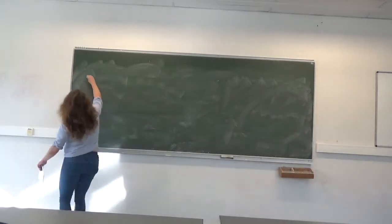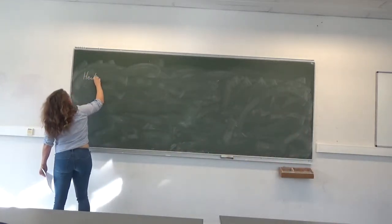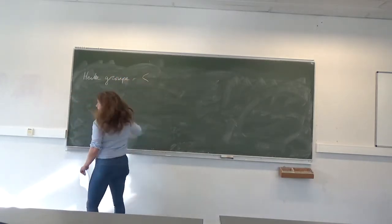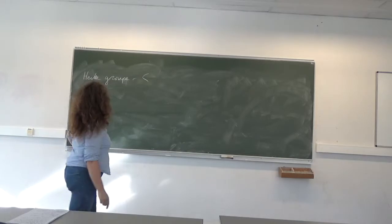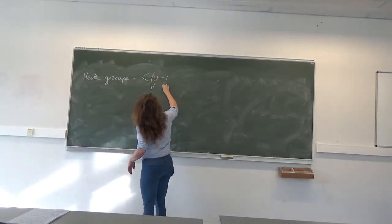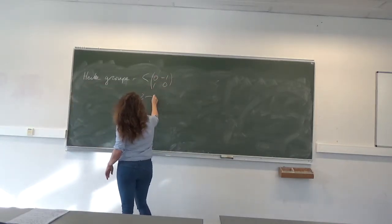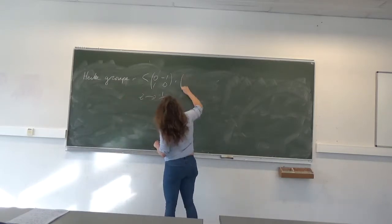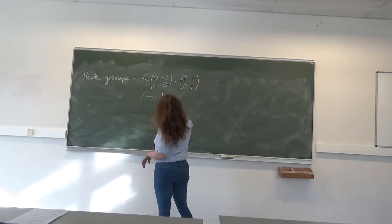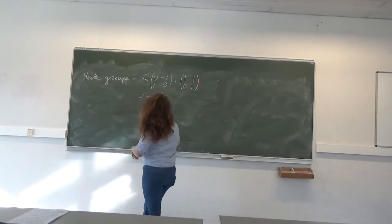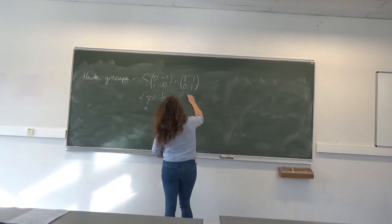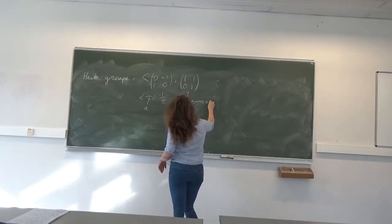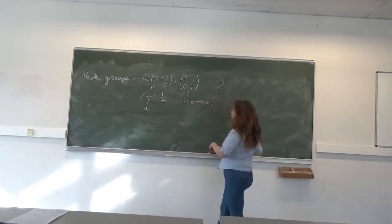So now we're going to be looking at the Hecke group, which is generated by two elements: the matrix [0, -1, 1, 0], which is the element z goes to -1/z, and [1, 1, 0, 1]. I'm going to call this one a and this one b, and this one sends z to z plus 1.